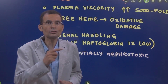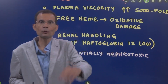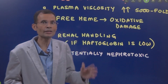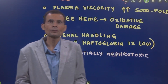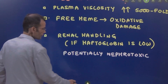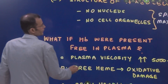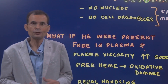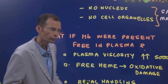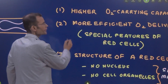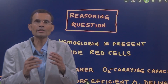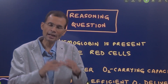If hemoglobin is lost into the urine, its components — iron and the proteins in the globin part — cannot be recycled and will also be lost. Therefore, these are the potential problems if hemoglobin were to be free in the plasma, and it is to the body's beneficial economy that hemoglobin is present inside the red cells.